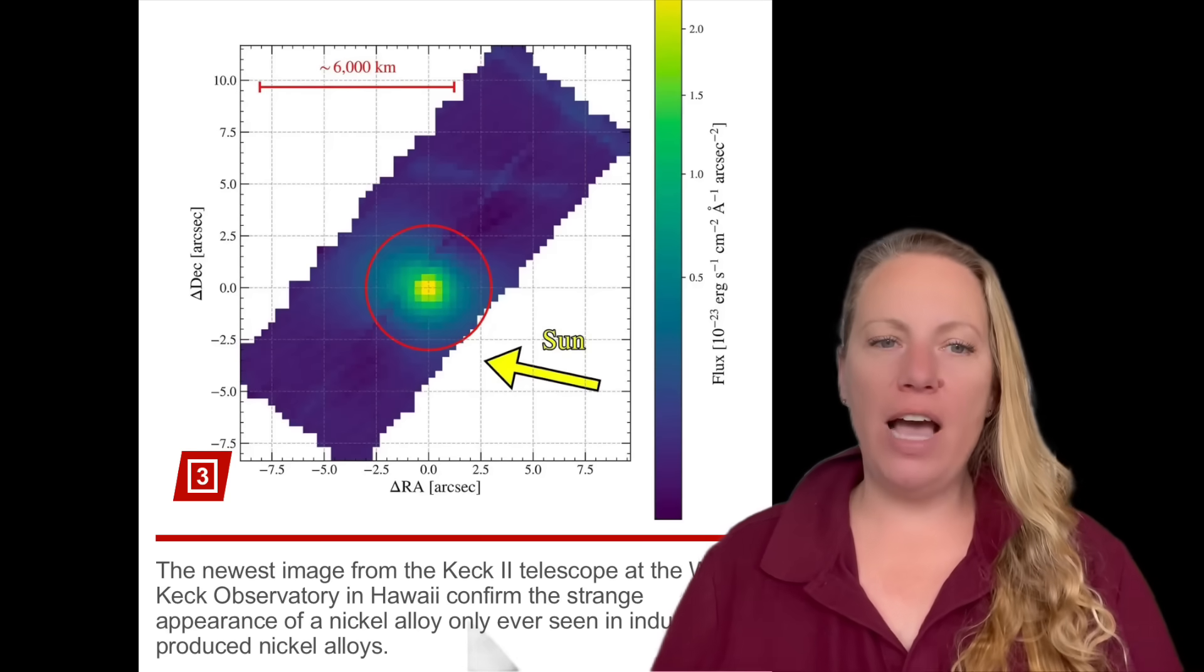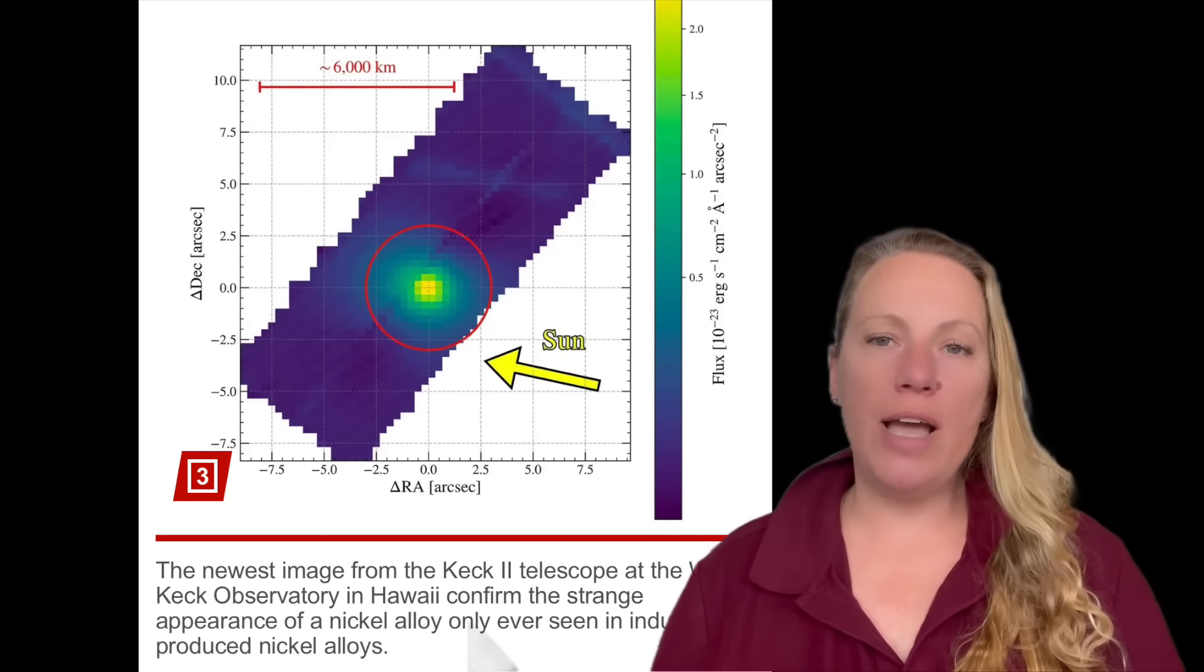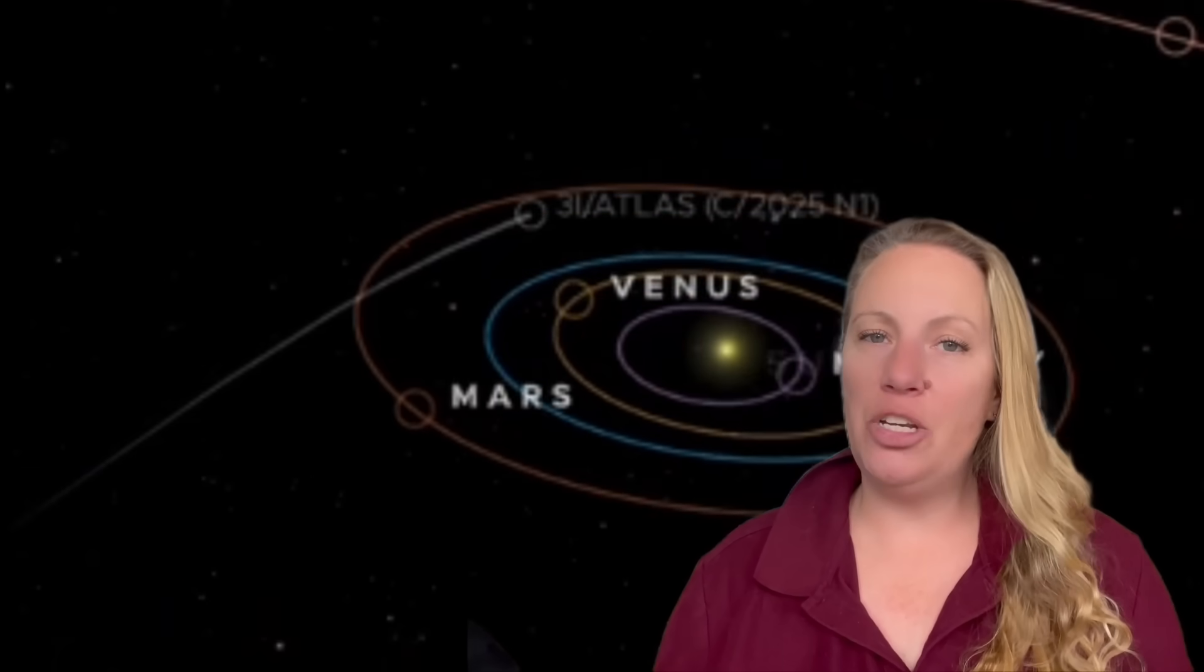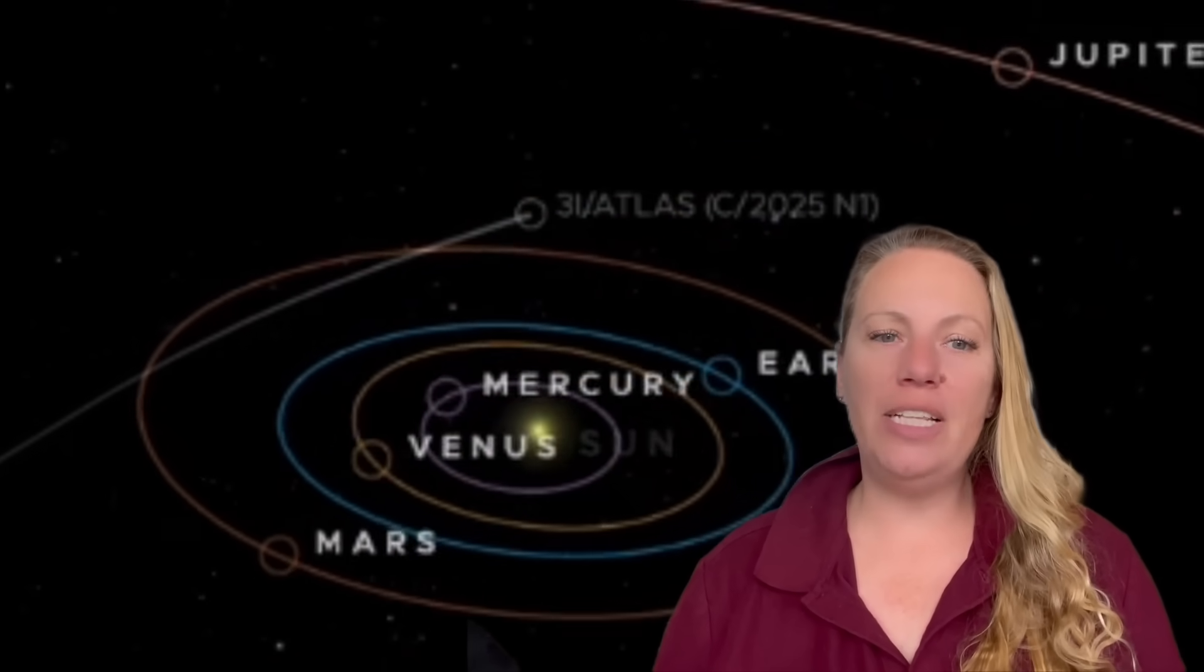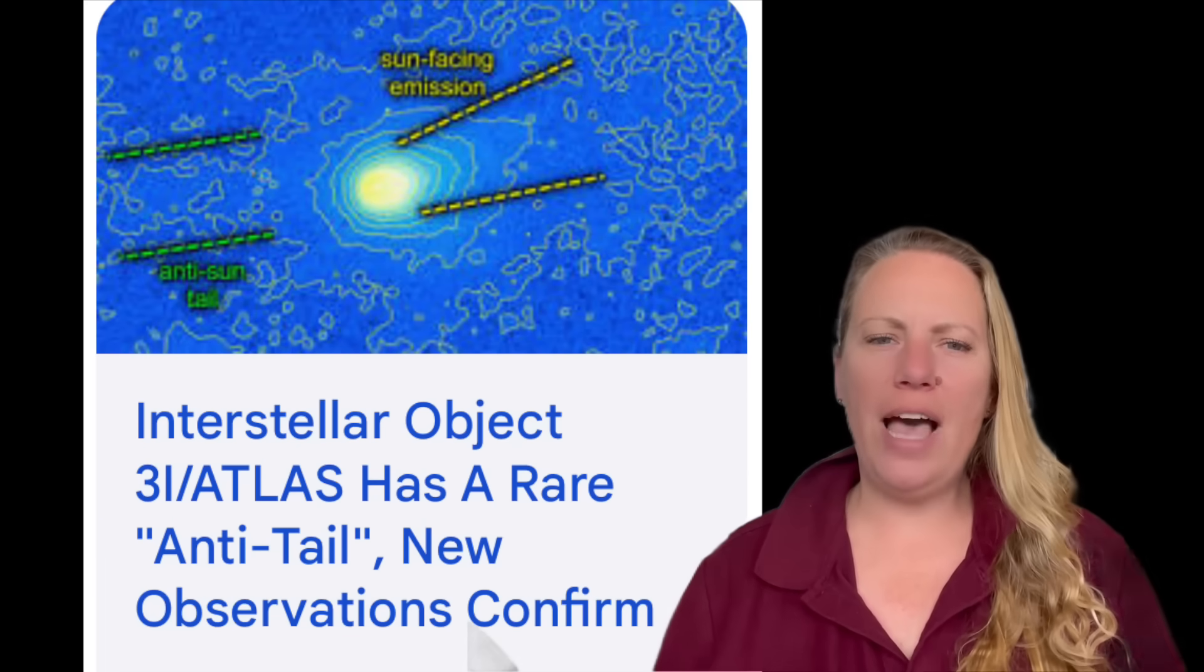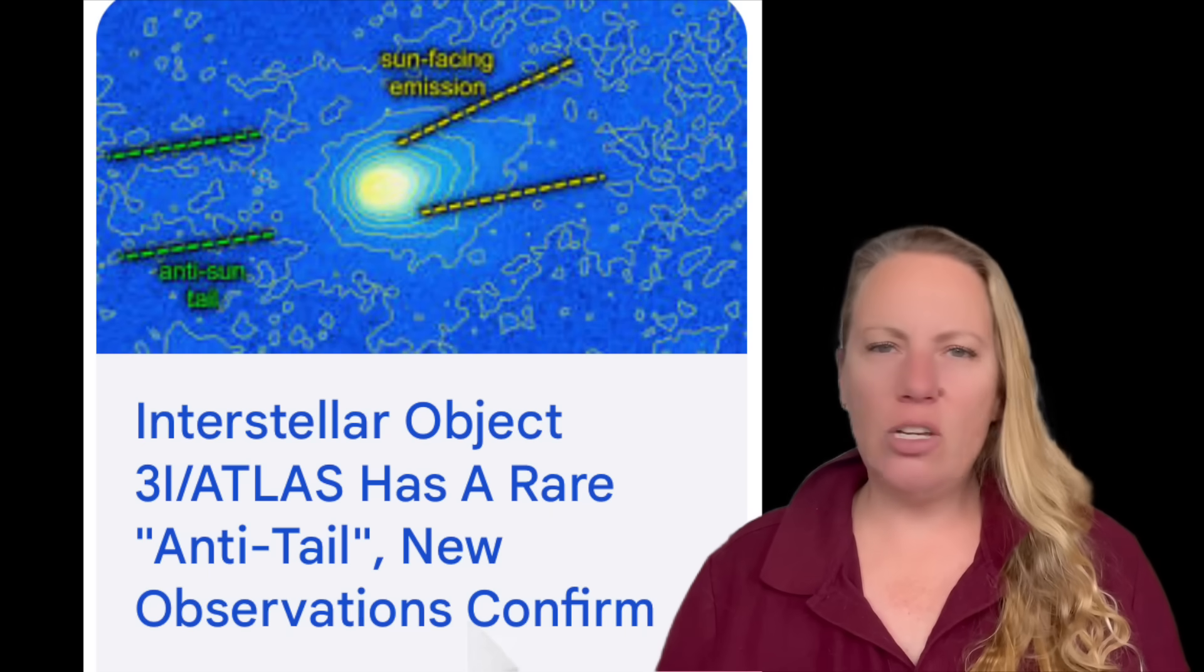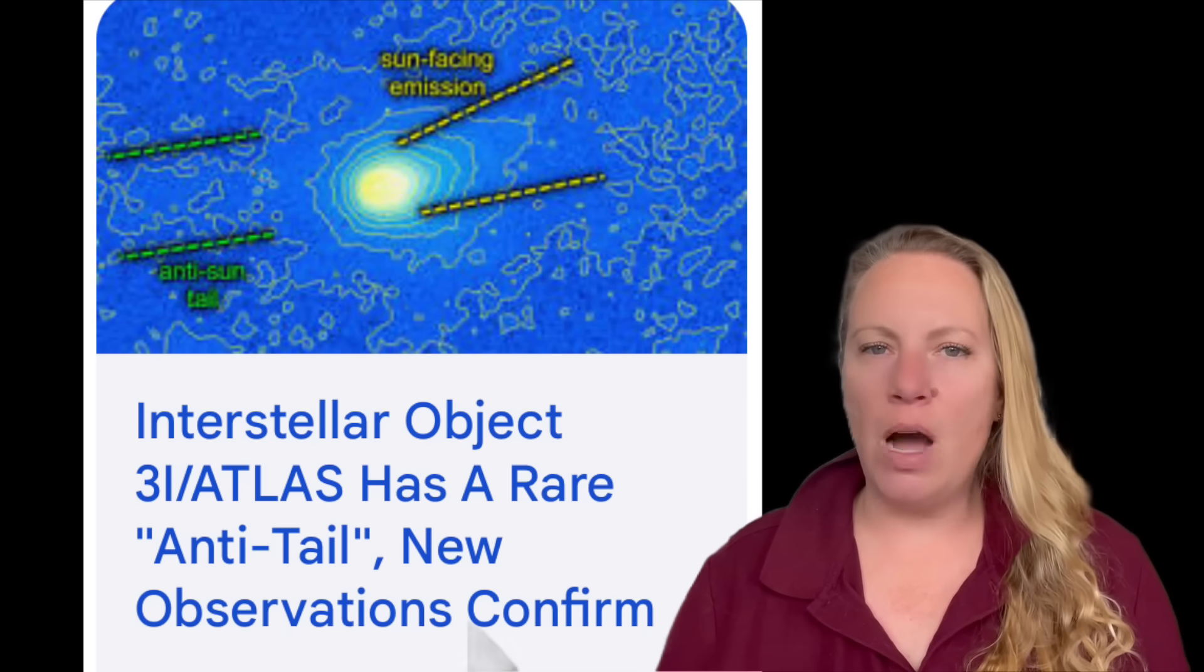On July 1st, 2025, the Survey Telescope Network, known as Asteroid Terrestrial Impact Last Alert System, in short ATLAS, in Chile, detected an object moving so fast on such a trajectory that it couldn't have originated from our solar system. They knew this right away and they looked at it and said, what is this? So they named it 3i Atlas.